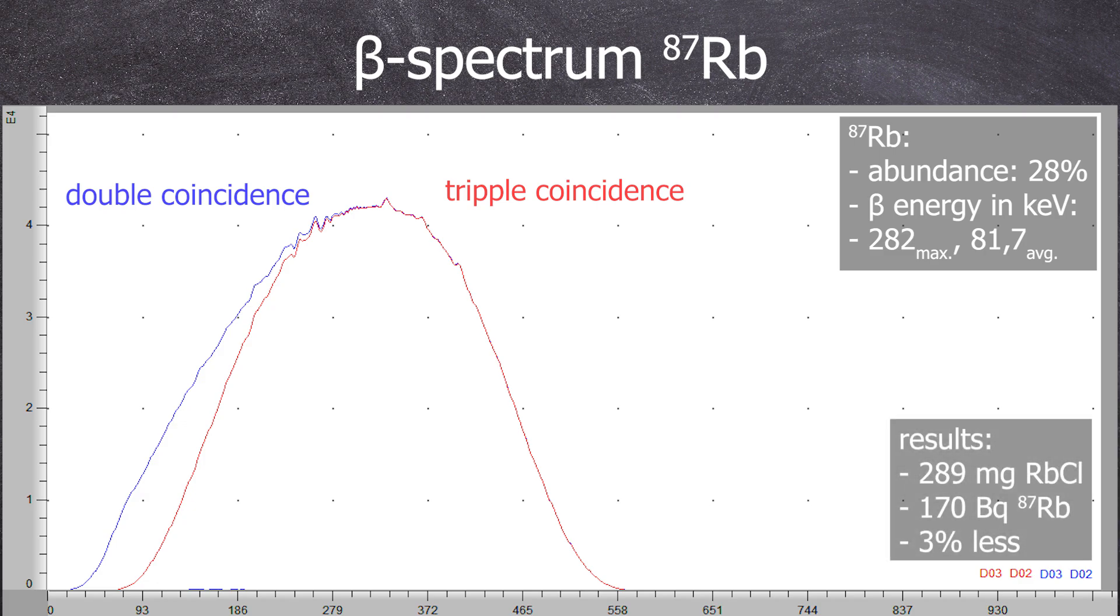We used 298 milligrams of rubidium chloride and measured a rubidium-87 activity of 170 becquerel, which is 3% below the calculated value.